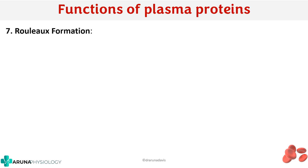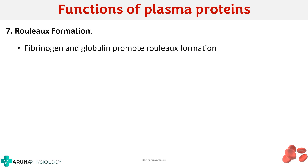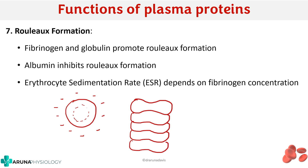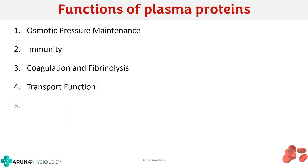Finally, another important function is rouleaux formation — the stacking of RBCs when blood is kept outside the body. Fibrinogen and globulin promote rouleaux formation, while albumin inhibits it. The erythrocyte sedimentation rate (ESR) thus depends on the type and amount of plasma proteins present. Each RBC has a slight negative potential called the zeta potential that normally causes RBCs to repel each other. When there is excess fibrinogen, it negates this negative charge so the RBCs stack on each other, forming the rouleaux.